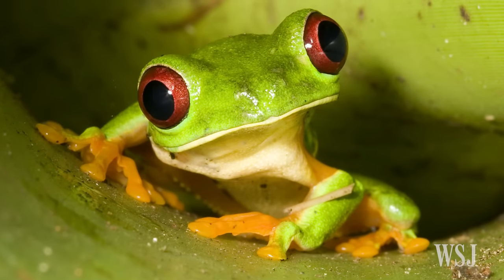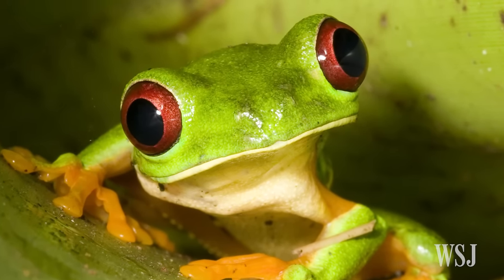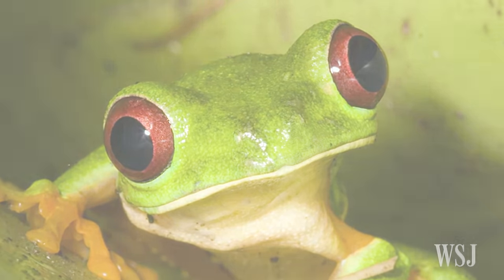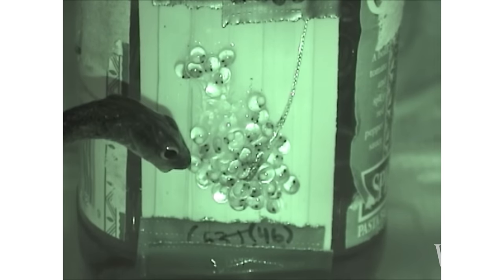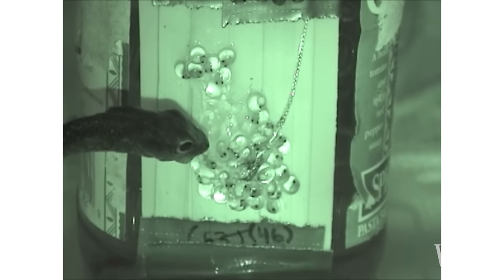But it turns out red-eyed tree frogs are the exception, a team of scientists has found. In times of danger, such as when a predator is attacking, the tiny embryos can break their way out of the blob of jelly in as little as 6 seconds and drop to safety in water below.